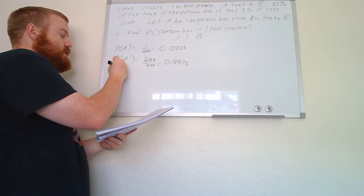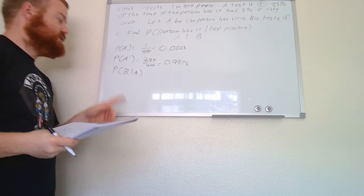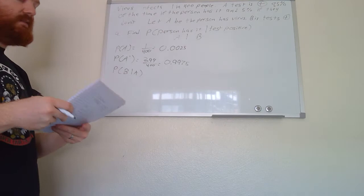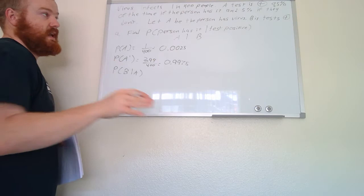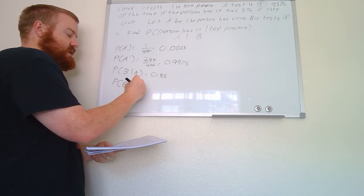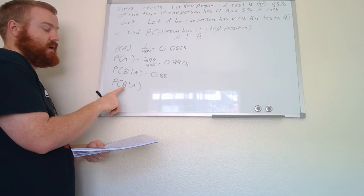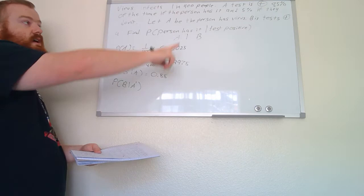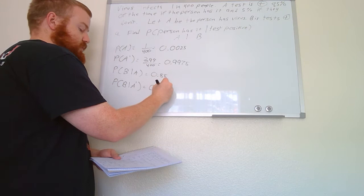We also know the probability of B given A — the probability that a person tests positive given the fact that they have the virus. That's the 85% chance, so 0.85. Therefore we also know the probability of B given A complement — the probability that the person tests positive given the fact that they don't have the virus. That's the false positive, which is the 5% the problem gave us, so 0.05.